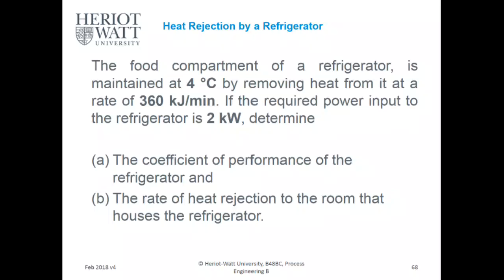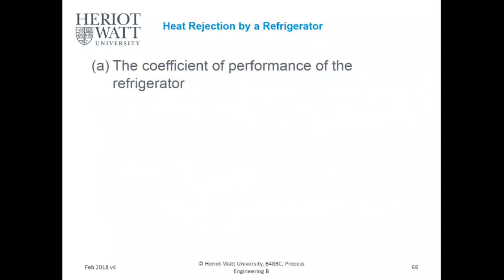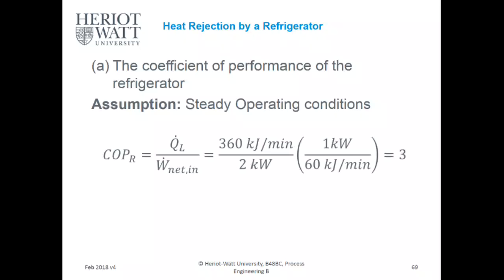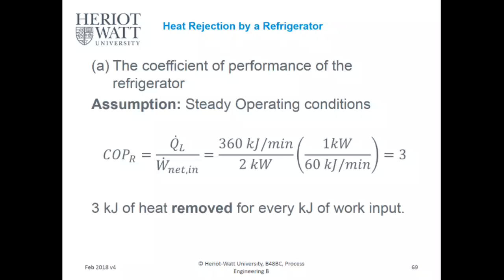Moving on to the coefficient of performance of the fridge. You need to assume a steady operating condition with no temperature fluctuations. The COP of the refrigerator is QL divided by the net work input, so it's 360 kilojoules per minute over two kilowatts. Make sure everything is in seconds — convert 360 by dividing by 60 — and you get a COP of 3.